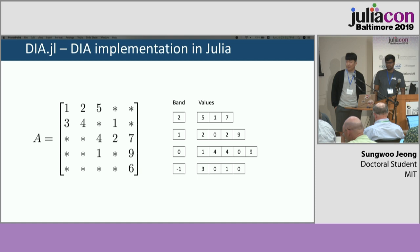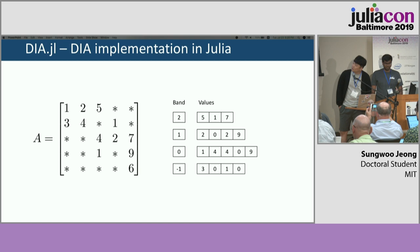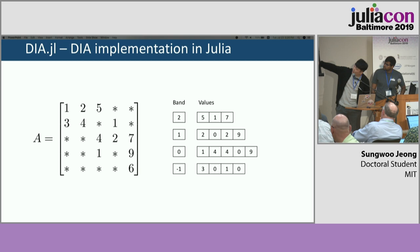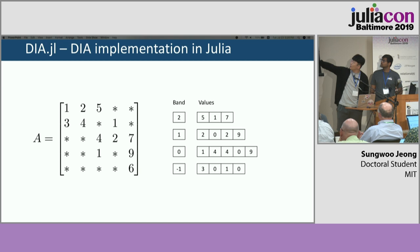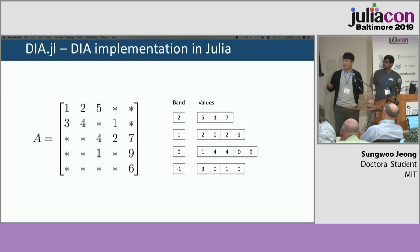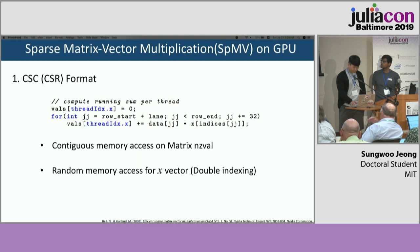Me and Ranjan started working on the DIA type. It's one of the primitive sparse storage types — it just stores diagonals. As you can see in this small example matrix, we store four diagonals separately. For example, the subdiagonal 3, 0, 1, 0 is stored with band negative 1, which is the position of the diagonal, and values 3, 0, 1, 0. If you're familiar with finite difference or finite element methods, DIA is actually the kind of matrix format that comes from structured grid problems.